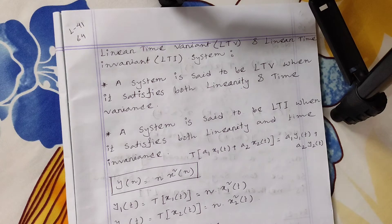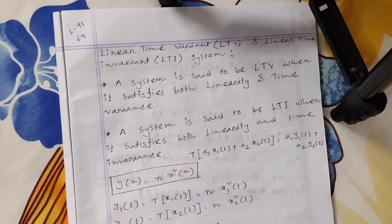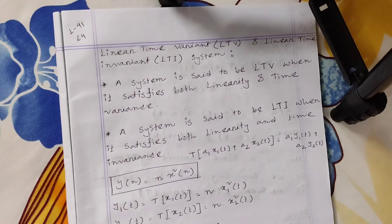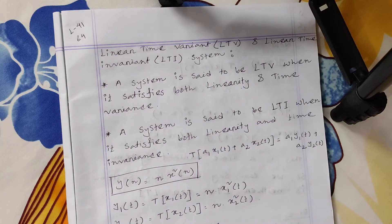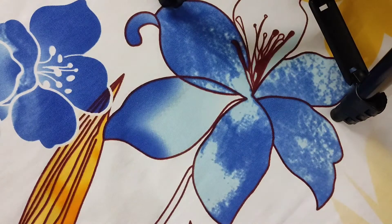We check linearity by applying the superposition theorem. The superposition theorem states that if the individual response and the combined response are the same, then we can call that system a linear system. If they are not the same, we call it a nonlinear system.